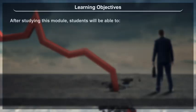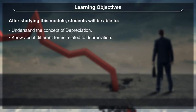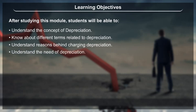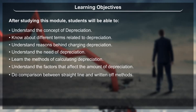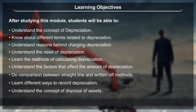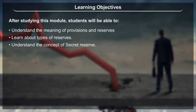Learning Objectives: After studying this module, students will be able to understand the concept of depreciation, know about different terms related to depreciation, understand reasons behind charging depreciation, understand the need of depreciation, learn the methods of calculating depreciation, understand the factors that affect the amount of depreciation, do comparison between straight-line and written-off methods, learn different ways to record depreciation, understand the concept of disposal of assets, understand the meaning of provisions and reserves, and learn about types of reserves including the concept of secret reserve.